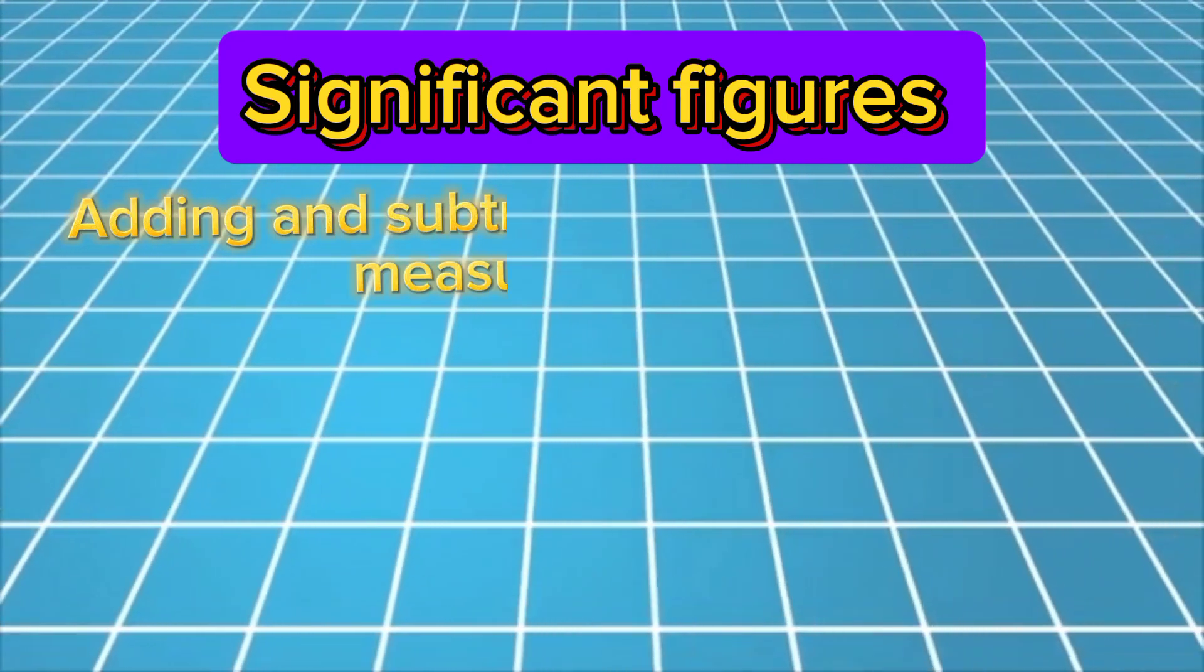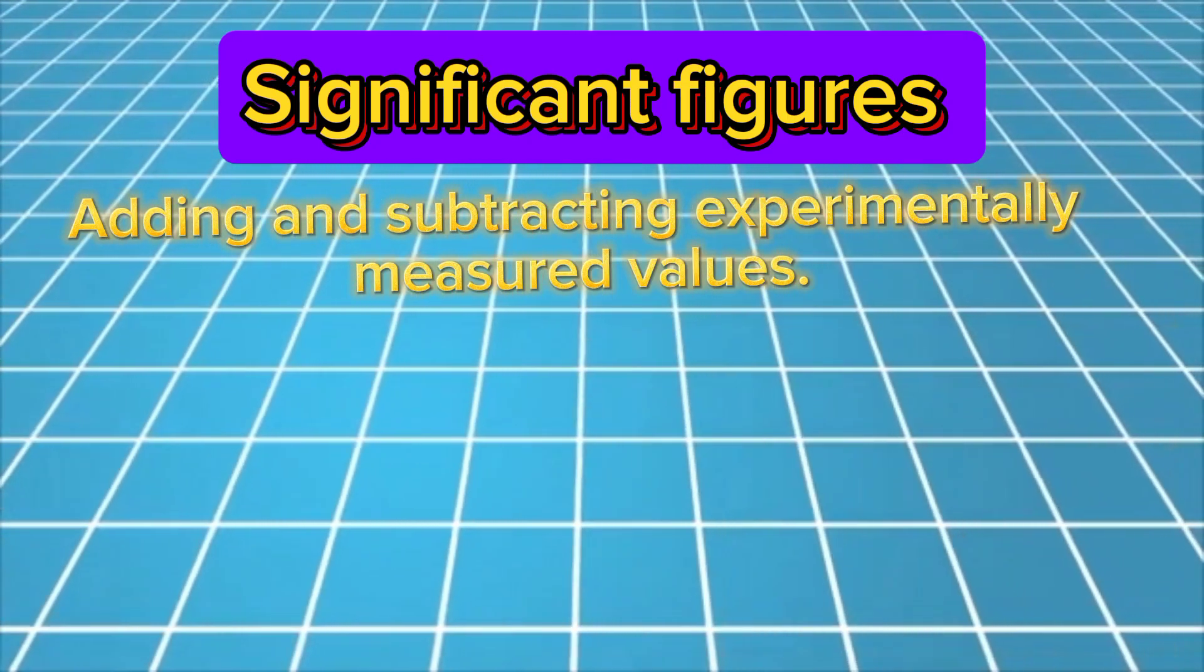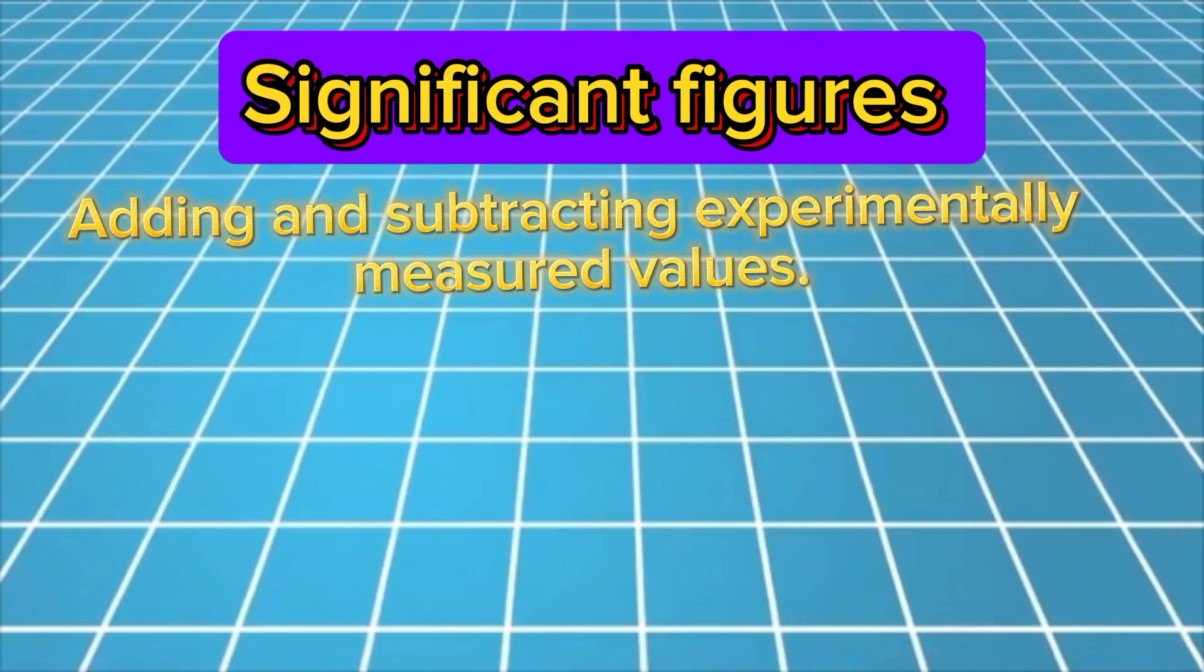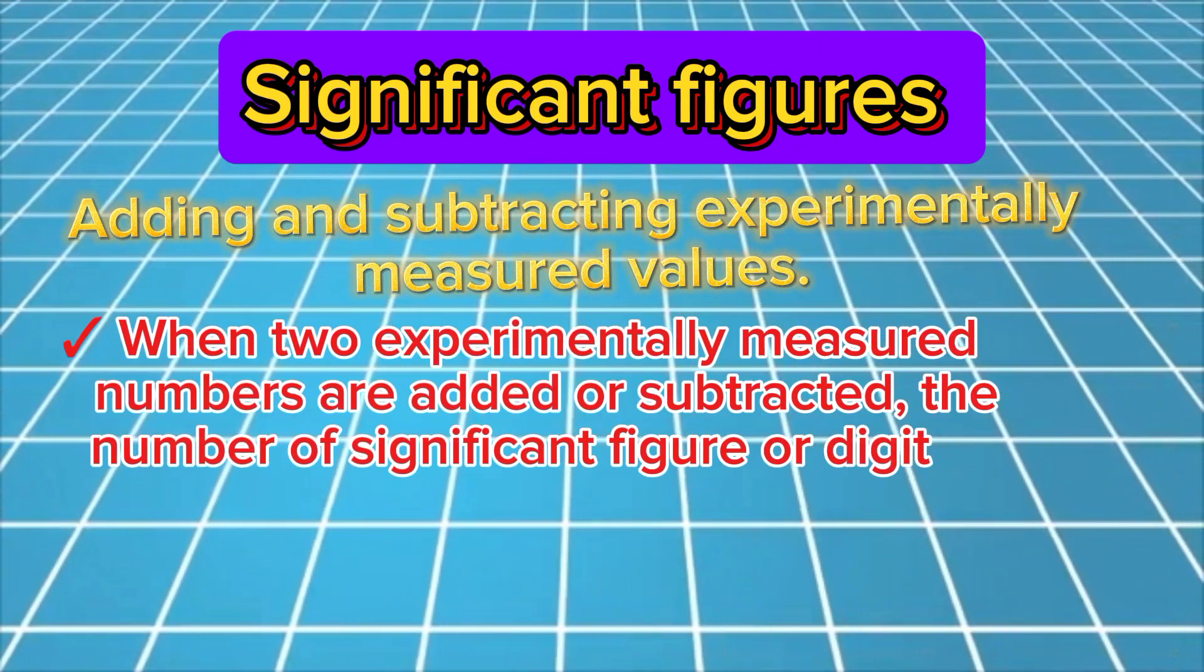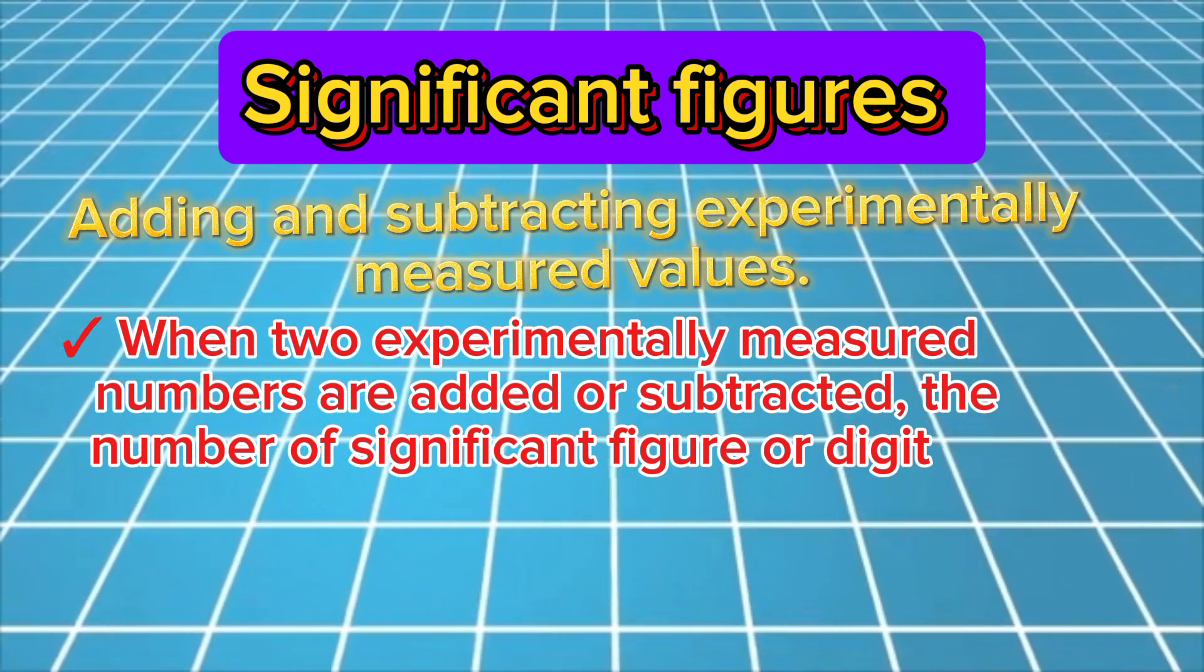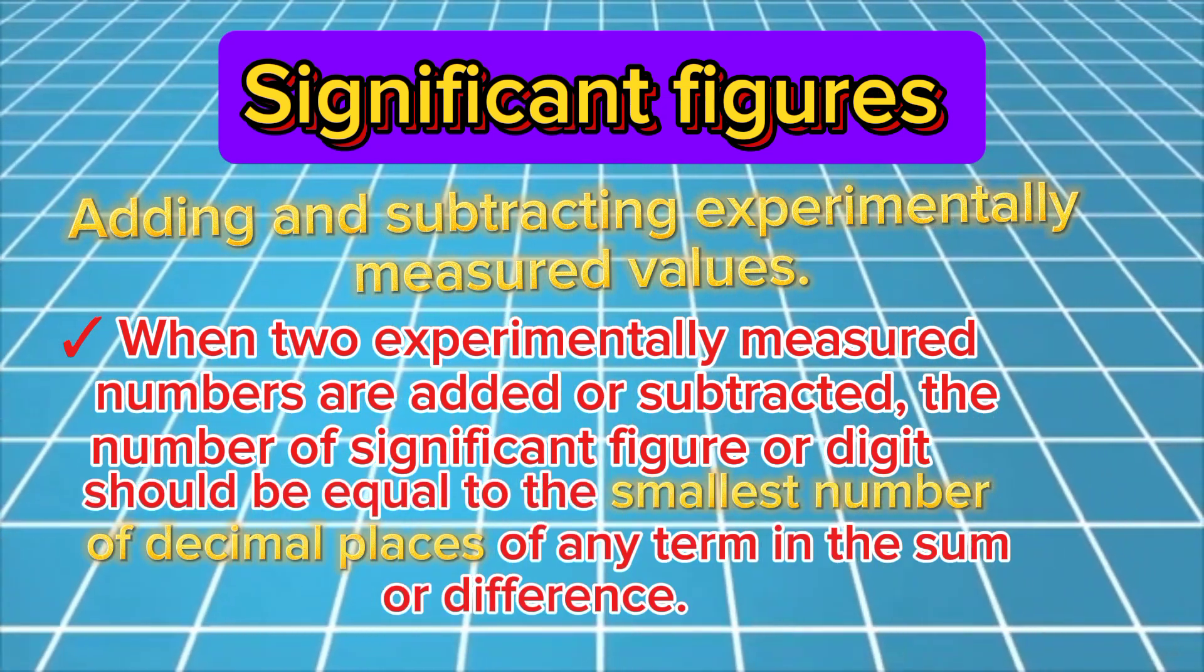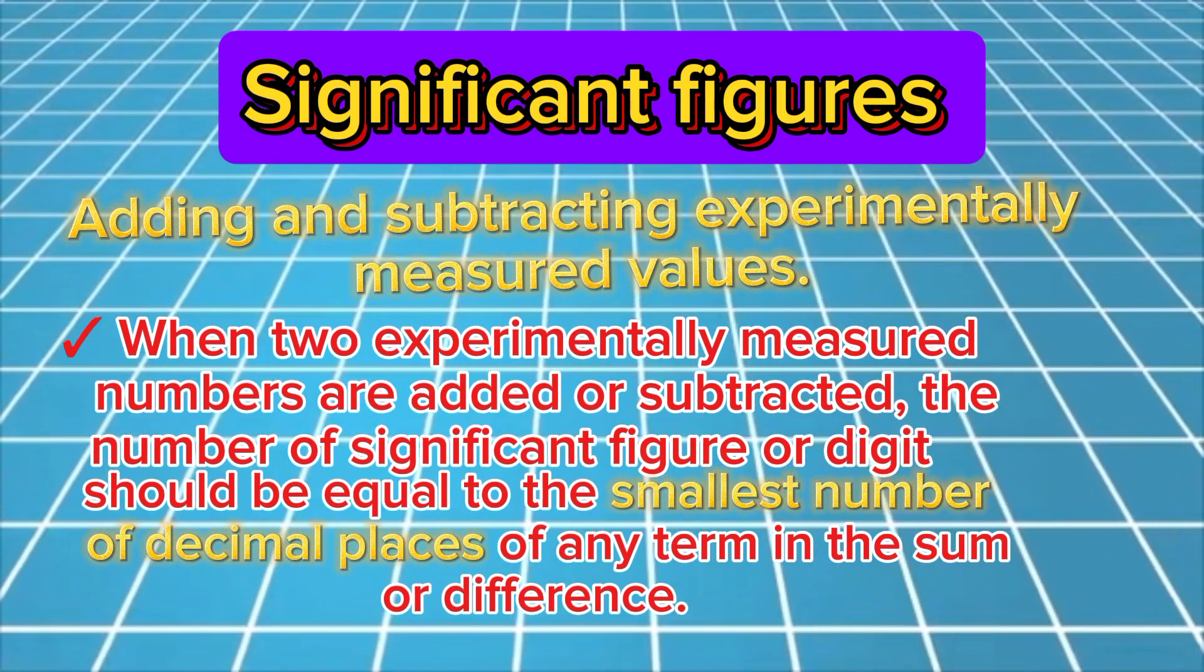Adding and subtracting experimentally measured values with different significant figures requires the following rule. When two experimentally measured numbers are added or subtracted, the number of significant figures or digits should be equal to the smallest number of decimal places of any term in the sum or difference.